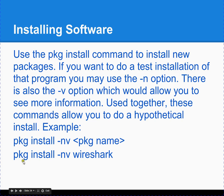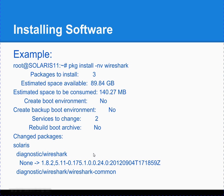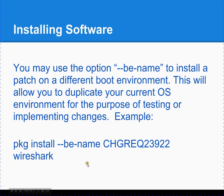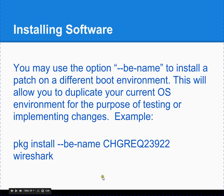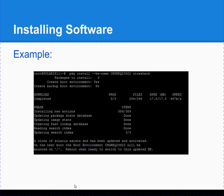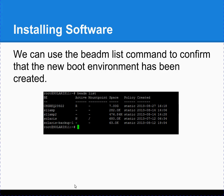To install a package, you type PKG install -nv. In this example, we do PKG install -nv Wireshark. The -nv option does a mock install in verbose mode and tells you everything that would happen if you install the package. If you want to install into a particular boot environment, you use the --be and --be-name options and then provide a name. In this example, a change request number was used as the name, with Wireshark as the package being installed. The output shows a new boot environment was created and will be active for the next reboot.